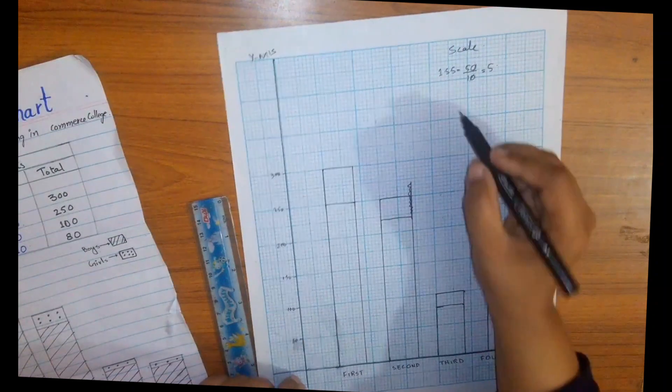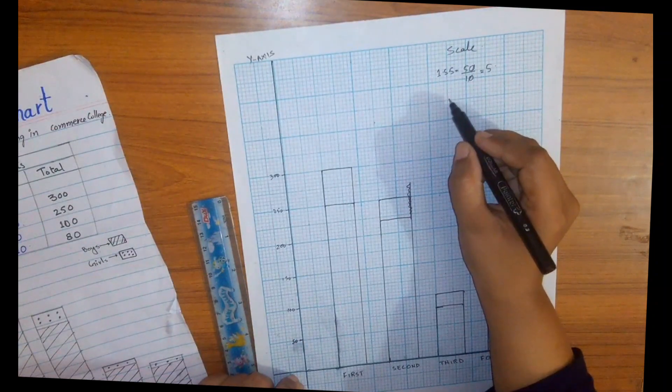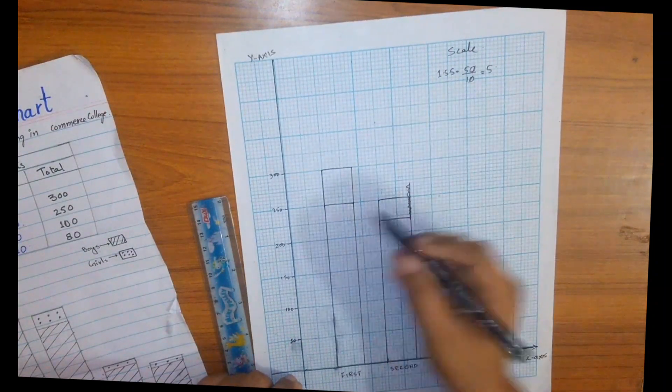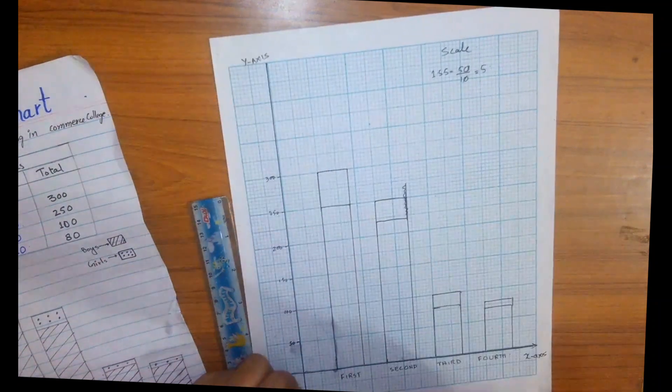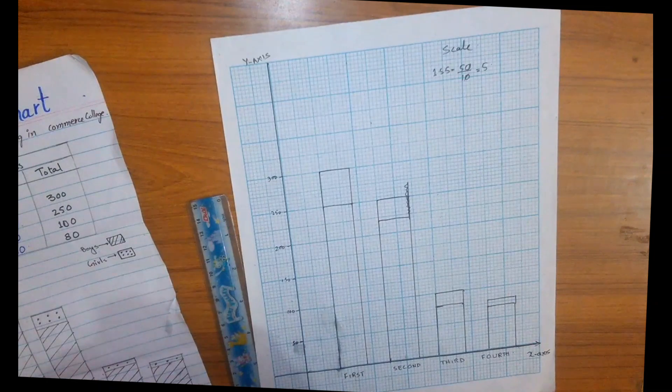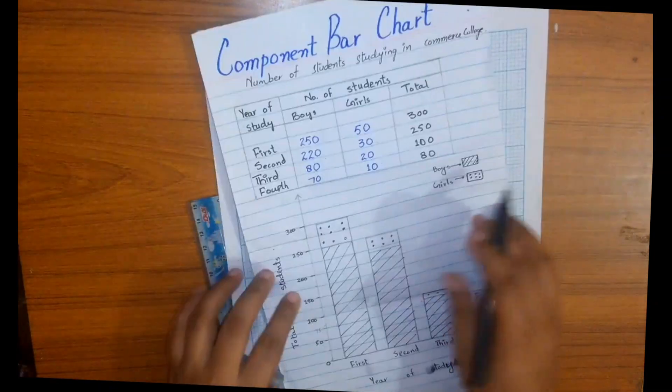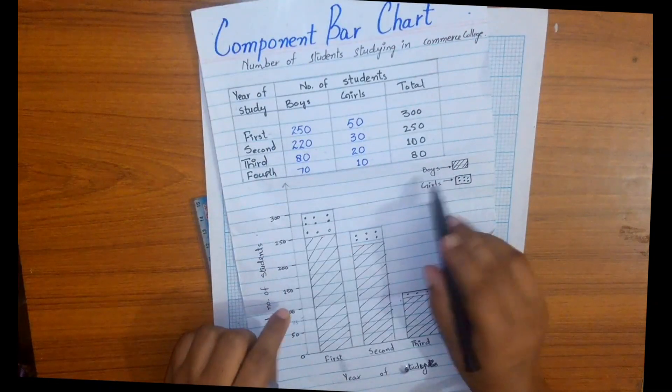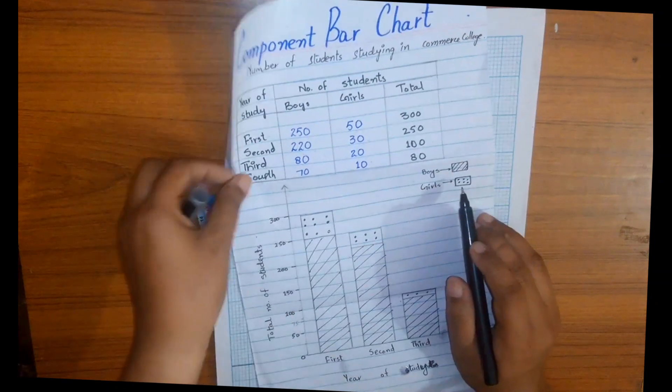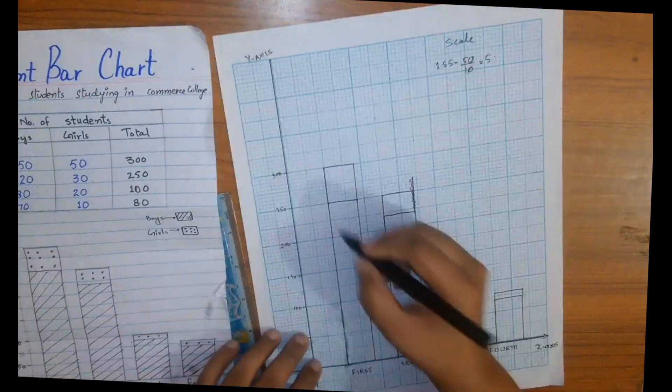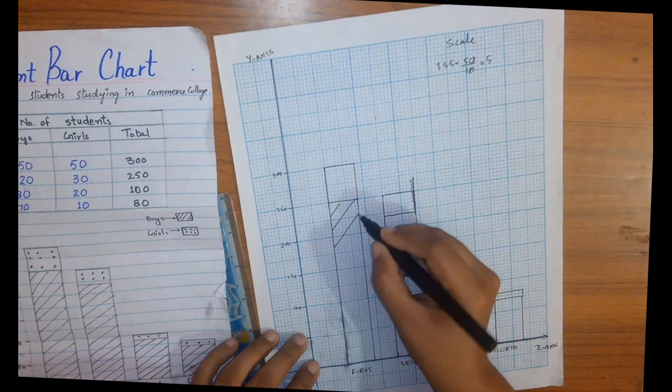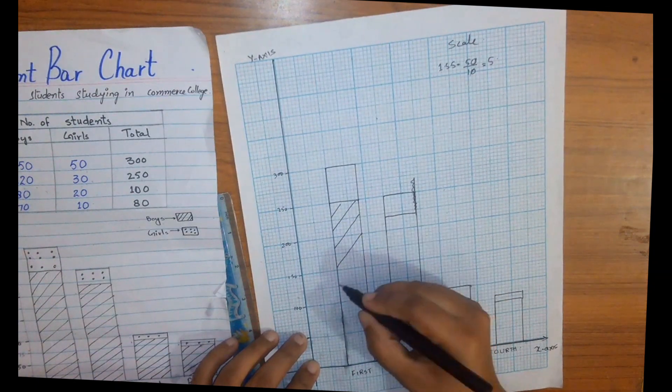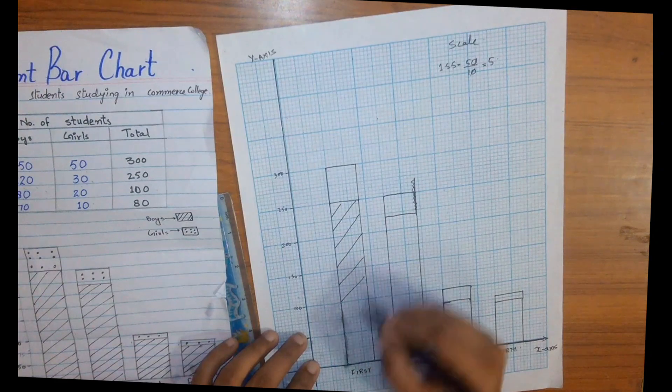And now here you can mention as well which portion of the bar is for boys and which portion is for girls. As we represent in our previous graph, lines for boys and dots for girls. Here I am going to mention the same, but if you want you can represent them with any color of your choice or with any other pattern.